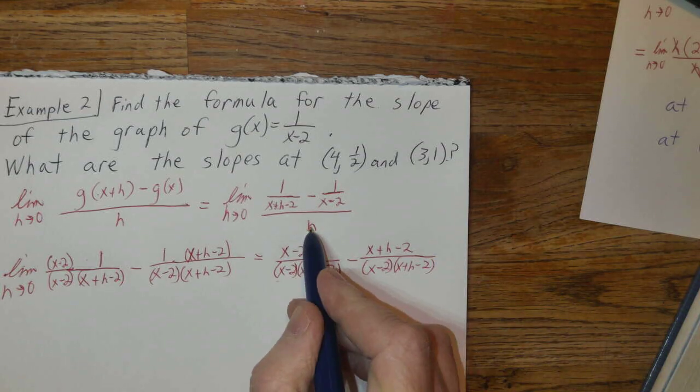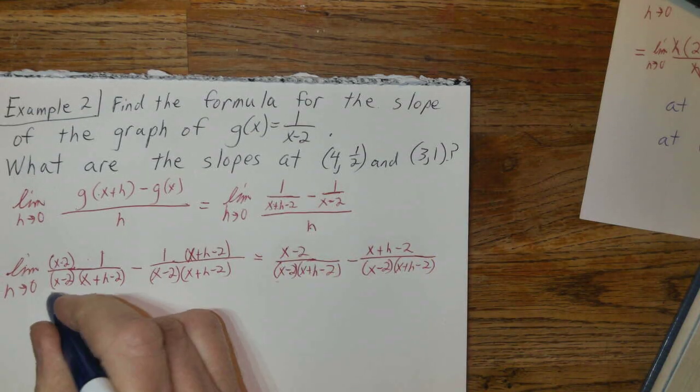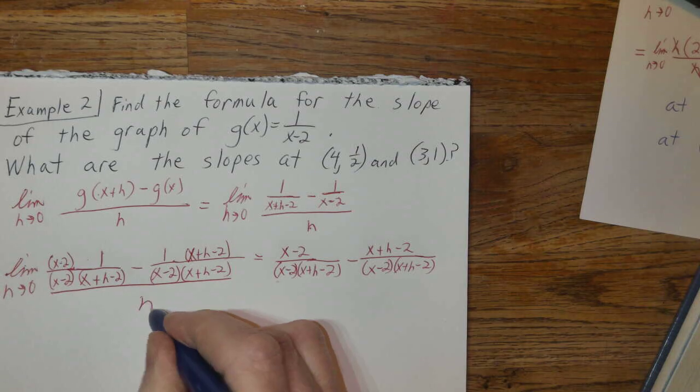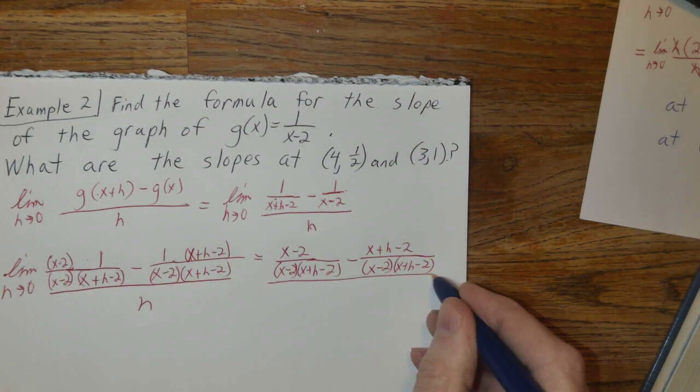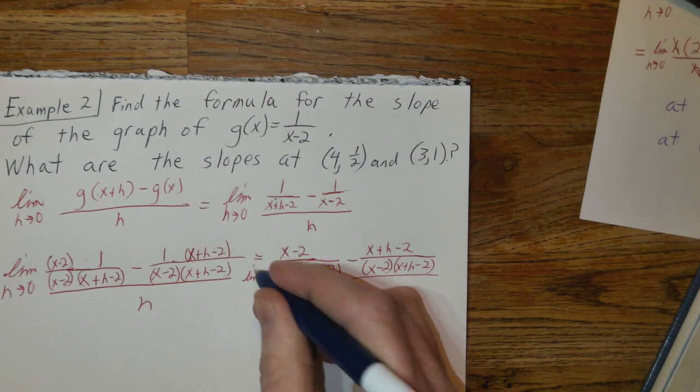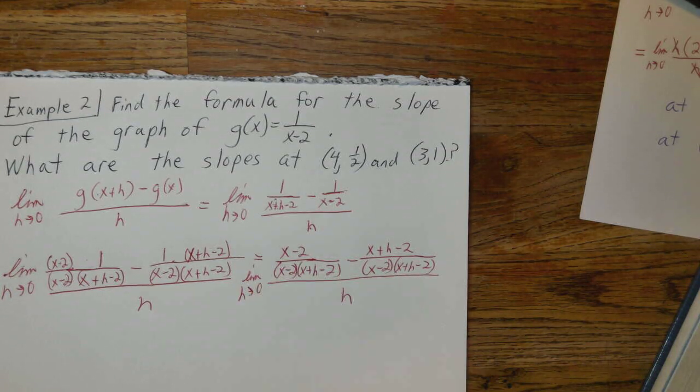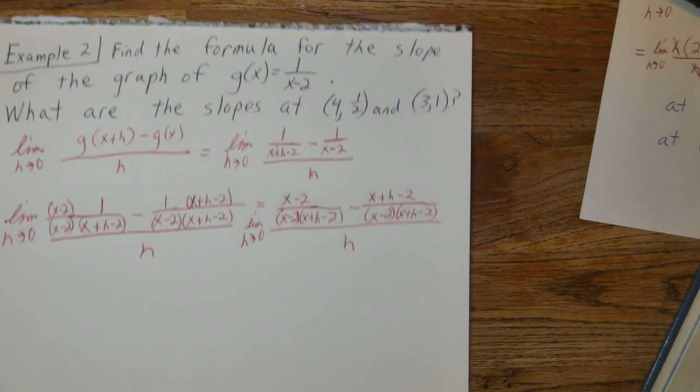I'm going to back up here for a second, because I realized I didn't write the h there. This is all still over h. This is just the numerator. This is over h, and as I'm prone to do, I forgot to write the limit there. The limit as h approaches 0.